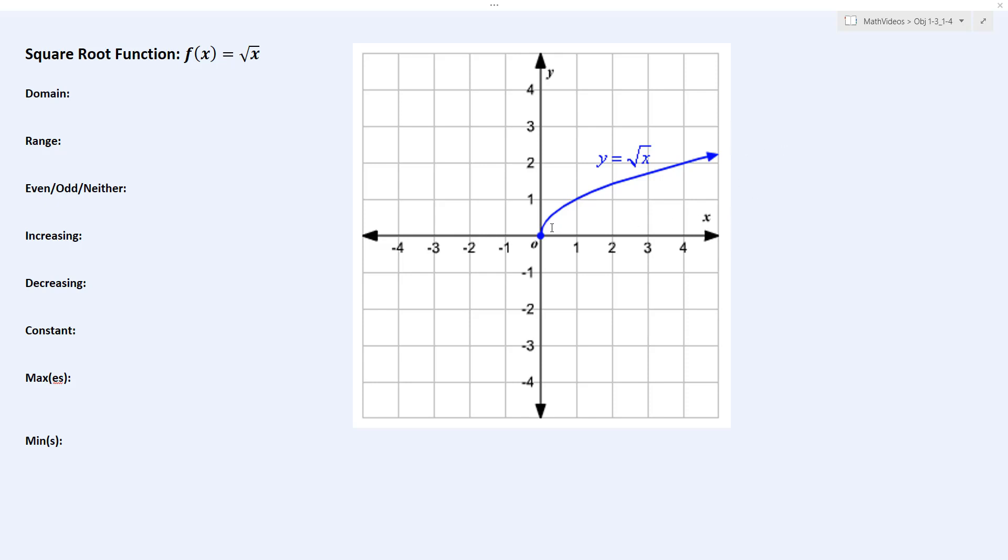In other words, if you were to take your graph of f(x) = √x and project it down onto the x-axis, you would see that it starts at x = 0. And then if you continue to project it down, you would project it down forever in the positive direction, continuing out to positive infinity.